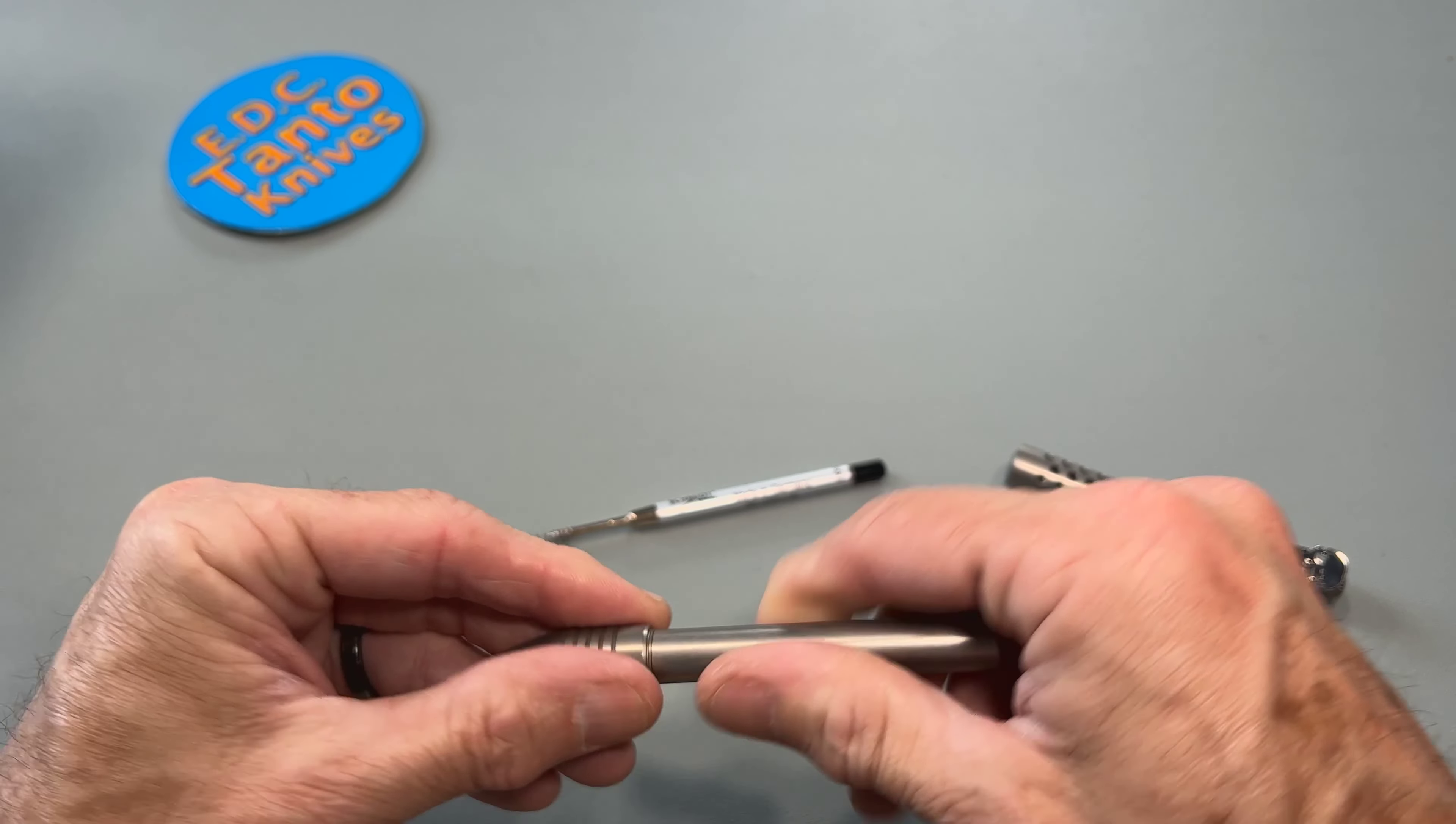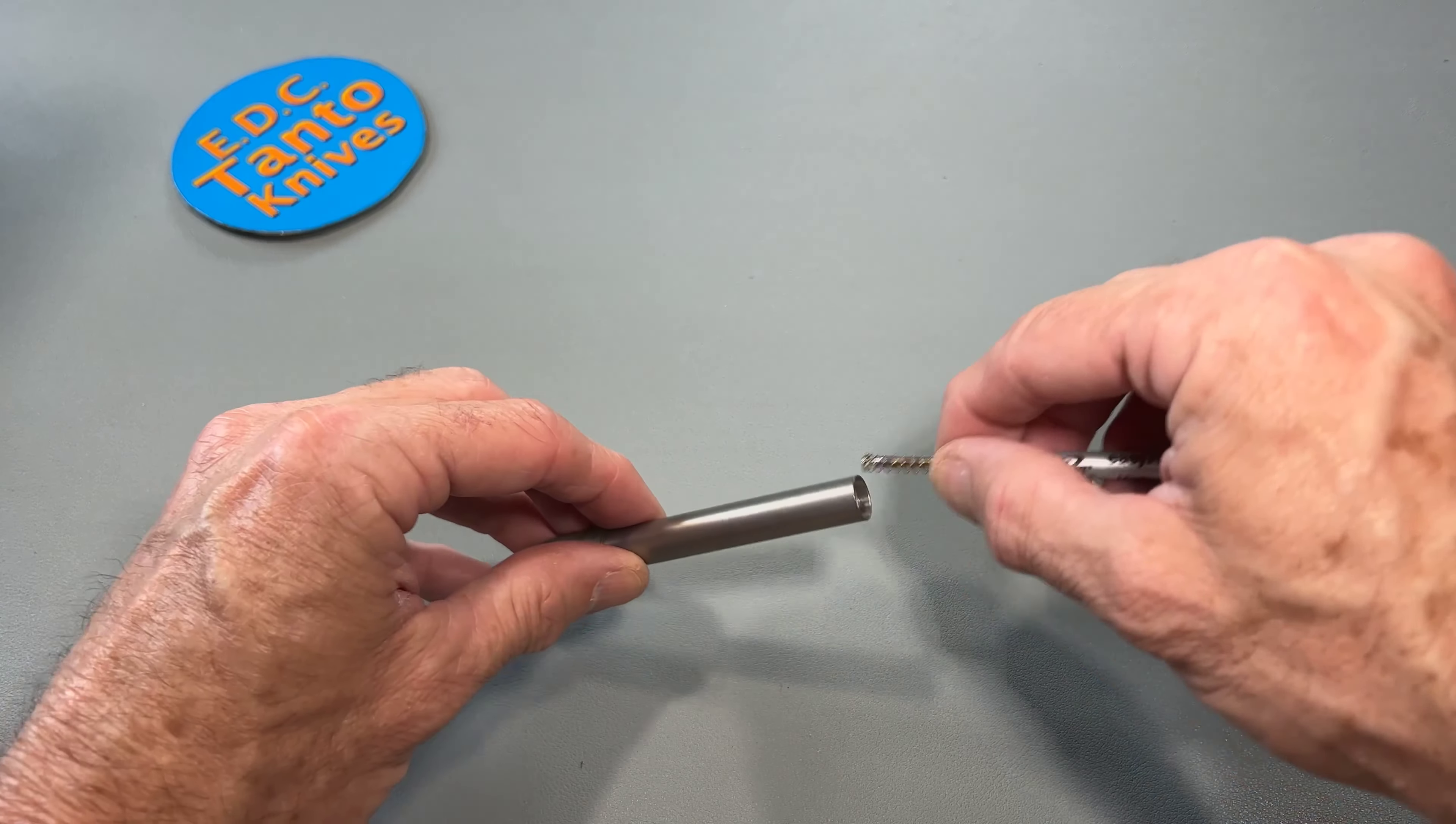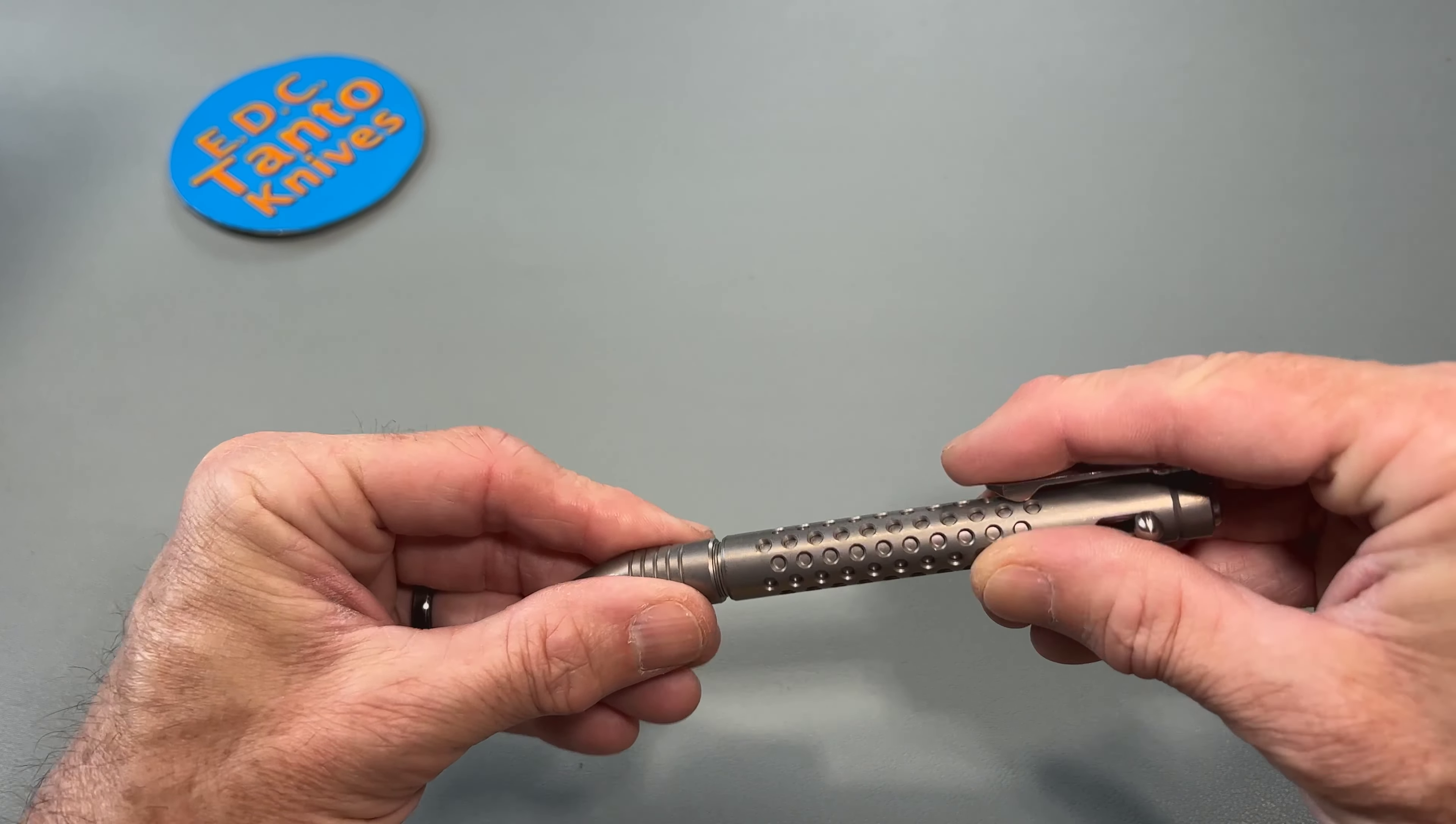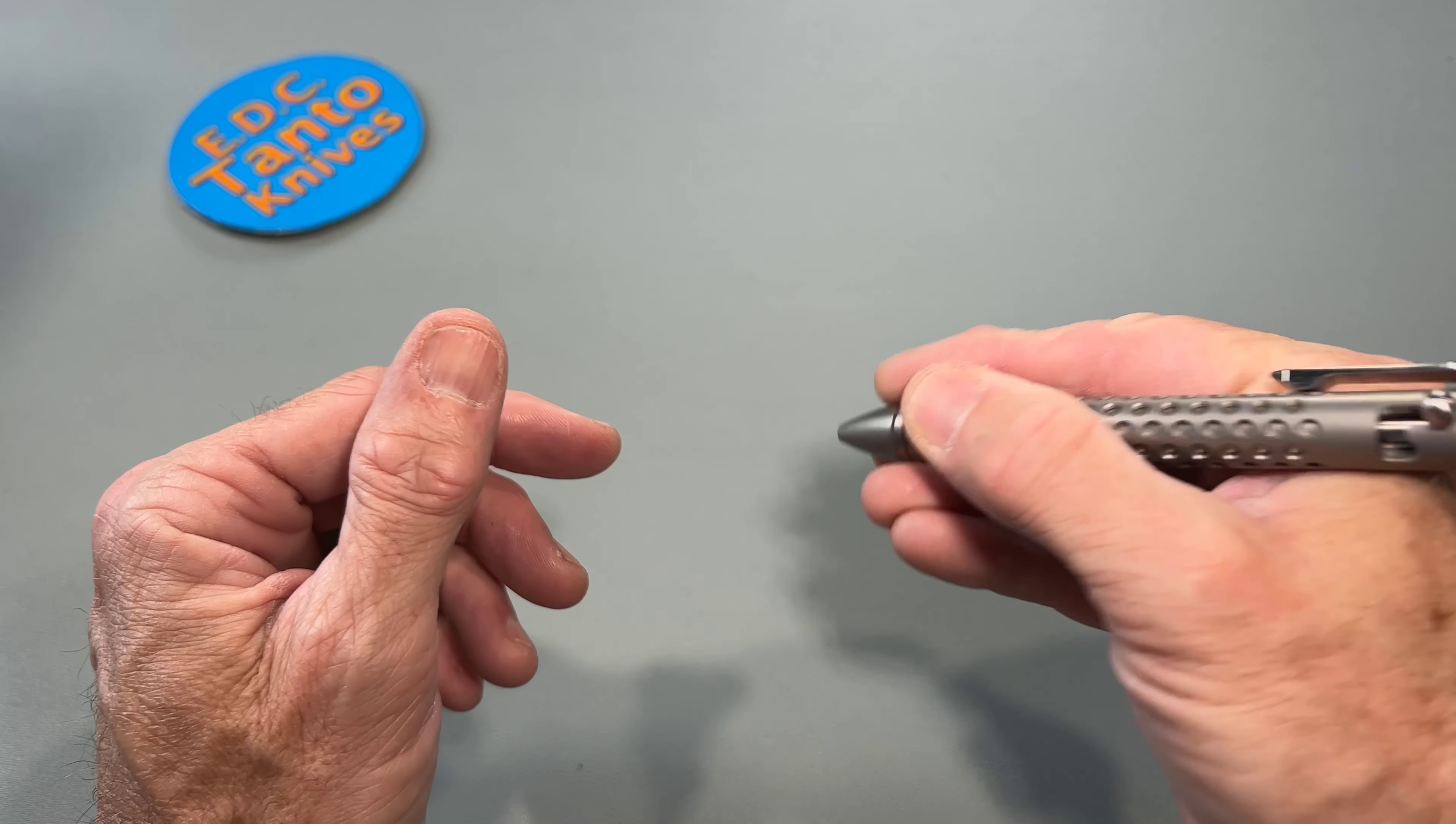Didn't pay attention to which way it was supposed to go there, but anyhow. We have a Schmidt Easy Flow 9000 medium, so not a bad cartridge. There's your bolt mechanism there. Very interesting, it just screws right back together just like that and you're right back to order.